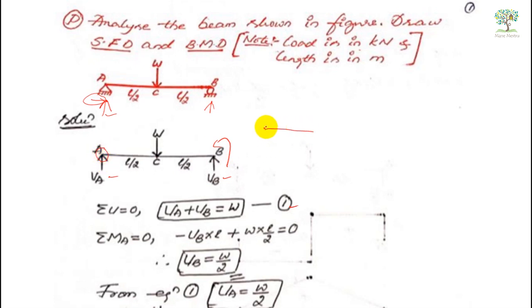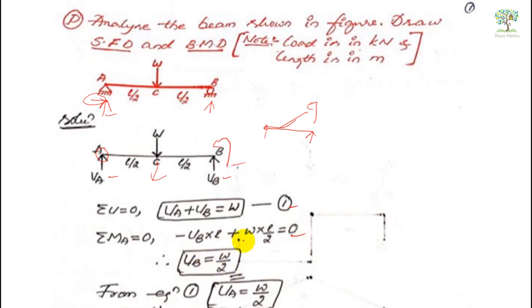The point load W acts at a perpendicular distance of L/2 from A, and it will try to bend the beam in the clockwise direction, so that is positive: W into L/2. Therefore, minus VB·L plus W·(L/2) equals zero. Solving this gives VB equals W/2. Substituting VB back into equation one gives us the value of VA.